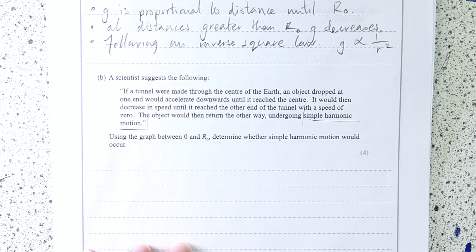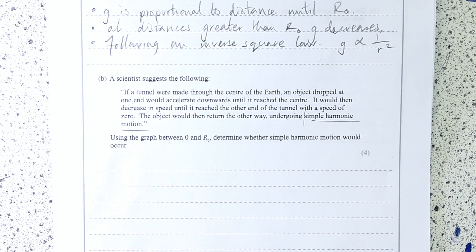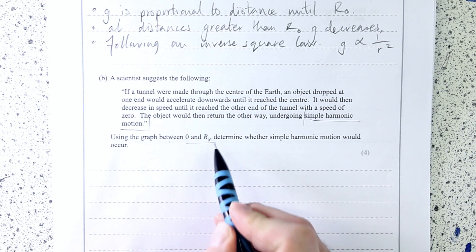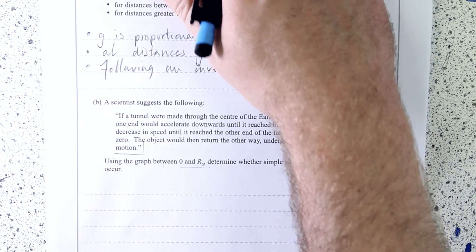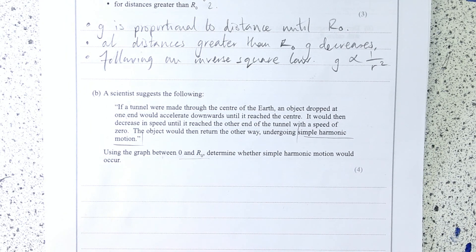So actually, the whole question is just actually about simple harmonic motion. Using the graph between zero and R₀, which we've said is proportional, g is proportional to distance, determine whether simple harmonic motion would occur. So actually, what would happen to somebody in freefall going through a tunnel straight through the core of the Earth would be they would just keep oscillating from one side to the other. And I just think it's a really funny idea of somebody going and saying hello to Australia, and then popping up and saying hello to me again, and it would just continuously happen.